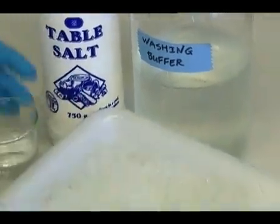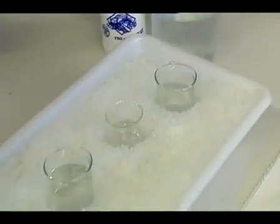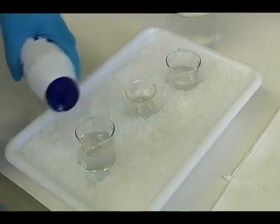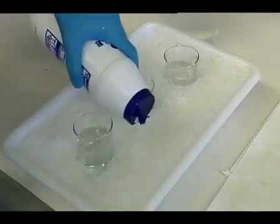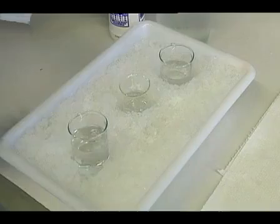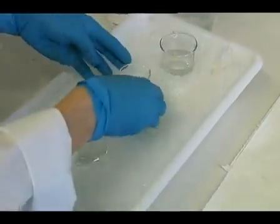Prepare three beakers containing 40 ml of washing buffer. Cool this in the ice salt bath for three to five minutes before proceeding to the next step. Make sure not to over freeze them and use immediately just after clouds of ice crystals started to appear.